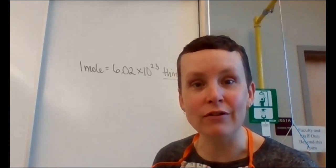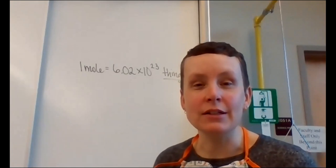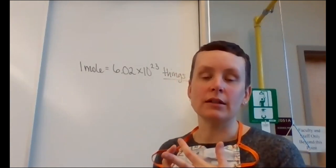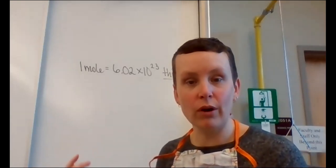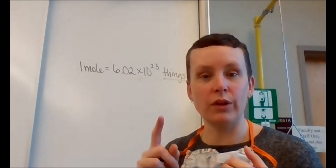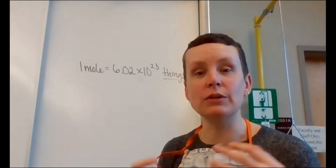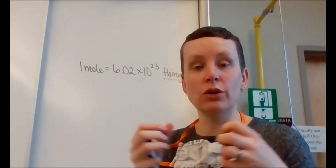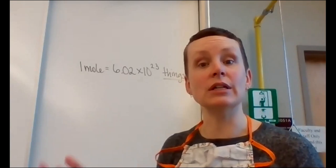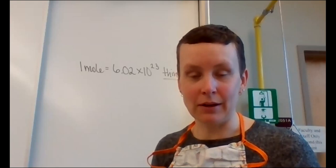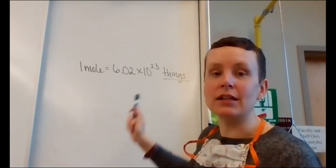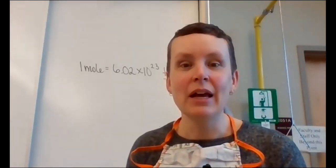It only makes sense to use this number with things that are very, very small — things we've been talking about in chemistry: atoms, molecules, and formula units. An atom is the simplest form of an element. A molecule is when atoms bond covalently, like in a diatomic element or something complex like a sugar molecule or DNA. Formula units are for ionic compounds where atoms give and take electrons to form ionic bonds.